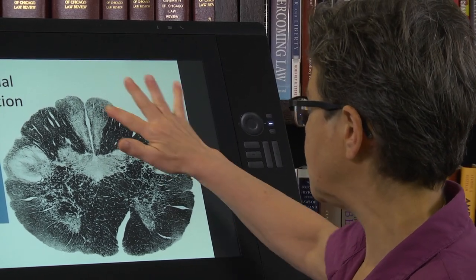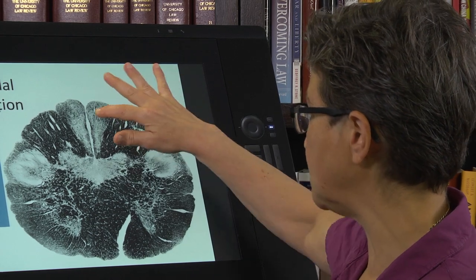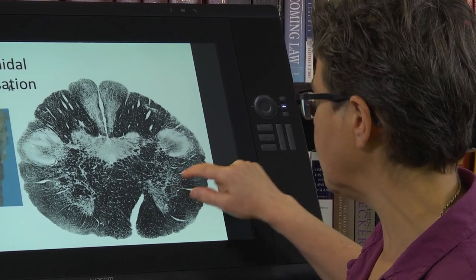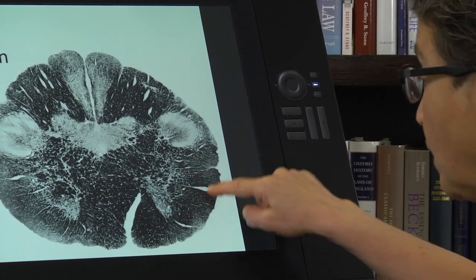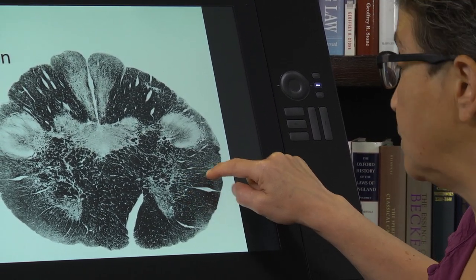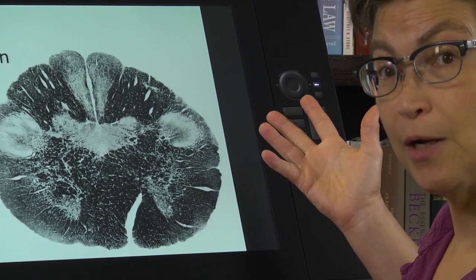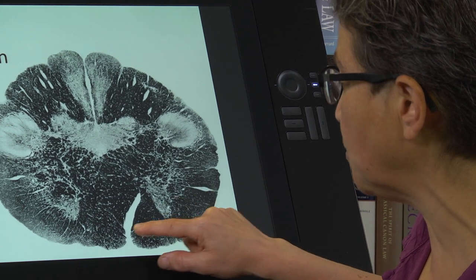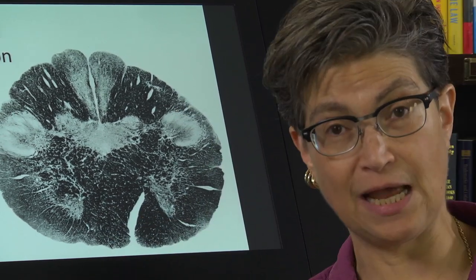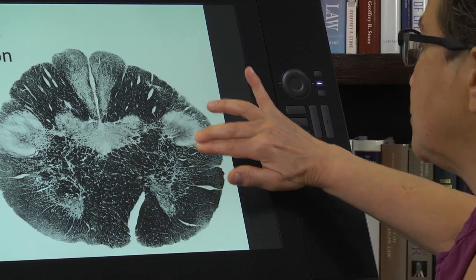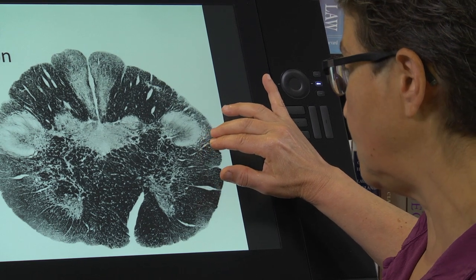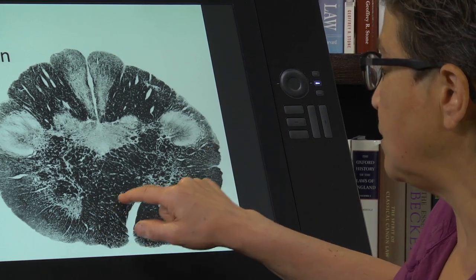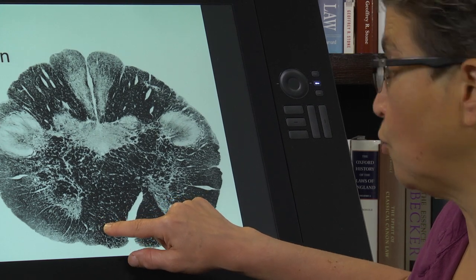The spinothalamic tract is traveling right here in the ventral lateral quadrant — it was there in the spinal cord and it's still in the same position in the medulla. The corticospinal tract is in the pyramids; as it descends from the medulla it crosses over to travel in the dorsolateral funiculus of the spinal cord, so this crossing contains axons descending from motor cortex.